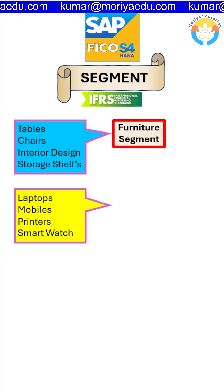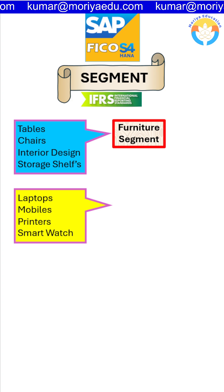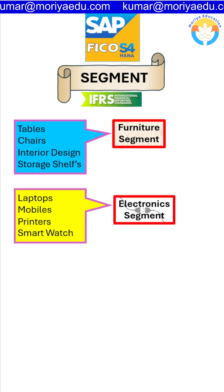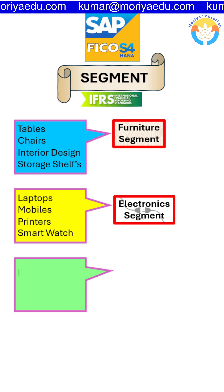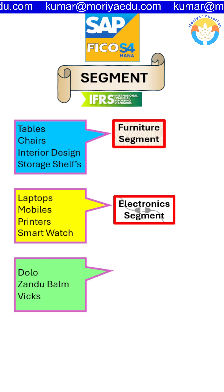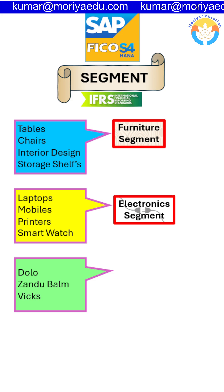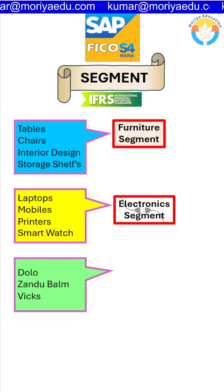We also have laptops, mobiles, printers, and smartwatches — these are all electronics, so we create a segment named 'Electronics'. Our company also deals in pharma products like Dolo, Zandu Balm, and Vicks, so we create a 'Healthcare' segment for these.